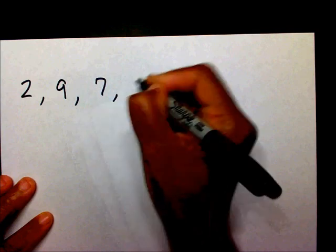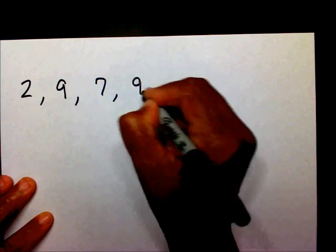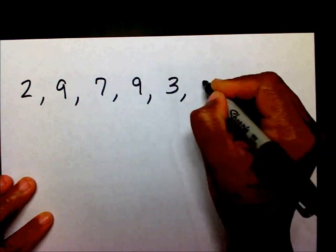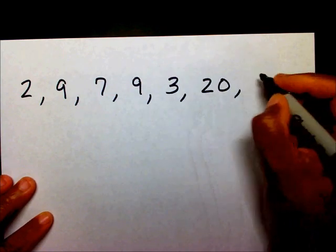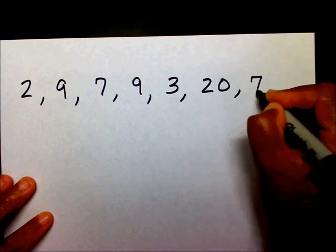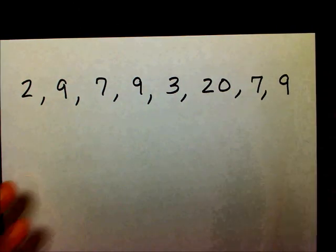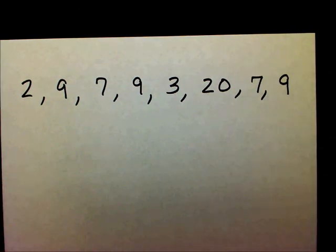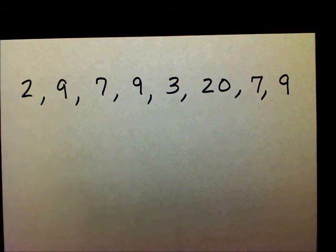Let's try 2, 9, 7, 9, 3, 20, 7, and 9. Remember, the mode is the number that appears the most — that you see the most of.